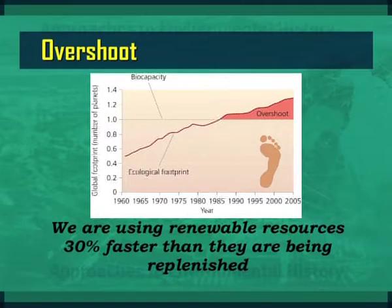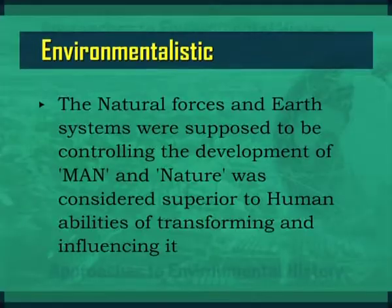Humans have in fact overshot the earth's capacity to support us, and we are using renewable resources 30 percent faster than they are being replenished. Prior to the industrial revolution, the majority of communities around the world tended to be environmentalistic, where natural forces and earth systems were supposed to be controlling the development of man, and nature was considered to be superior to human abilities of transforming and influencing it. The concept of God and religion on one side, and the fear of the unknown, helped to keep this belief intact. The very fact that natural forces like the sun, wind and other forces of nature were conceptualized as gods — from the Greek period to the modern era across different civilizations and religions — possibly meant that the fear of the unknown helped to keep human exploitation of natural resources in check.